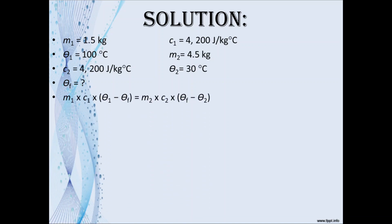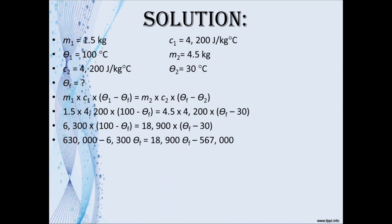Next, after identifying our givens, we proceed by writing our formula. Then we substitute our values. After we substitute the values accordingly, we would simplify by multiplying 1.5 times 4200, which gives you 6300, and then 4.5 times 4200 gives you 18,900.